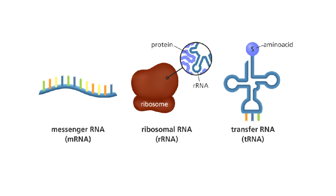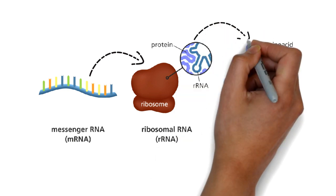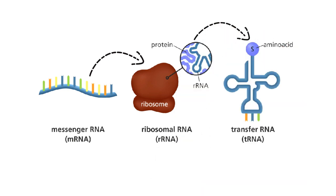So, all these types are involved in gene expression. Messenger RNA brings the message from the nucleus, ribosomal RNA makes proper arrangements, and transfer RNA brings amino acids one by one to complete the process.